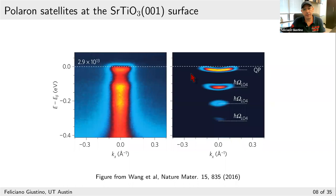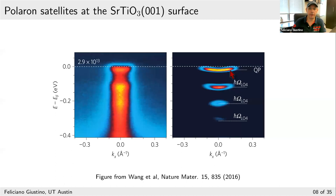This is the experiment I showed on Tuesday when commenting on the breakdown of elementary perturbation theory. From the Baumberger group in Geneva, for strontium titanate, they obtained a conduction band bottom, then a first satellite, a second satellite, and a faint third satellite — all separated from the main quasi-particle band by integer multiples of phonon energies. That's a confirmation of what was seen in the previous experiment.